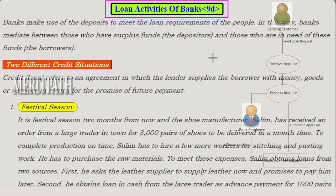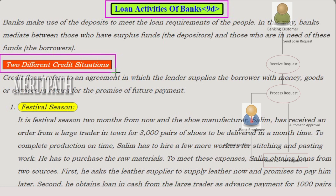Banks make use of deposits to meet the loan requirements of the people. In this way, banks mediate between those who have surplus funds — called depositors — and those who are in need of these funds — called borrowers. We will now see two different credit situations: one involving a festival season and the other involving a person called Swapna.